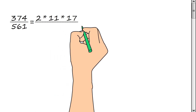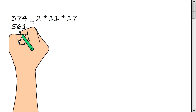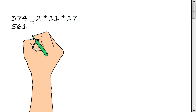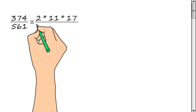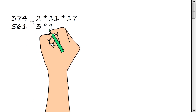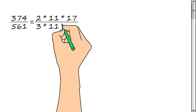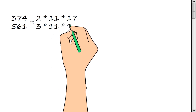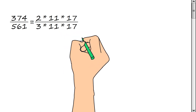Now we represent the denominator of the fraction as a product of prime factors: 3, multiply by 11, multiply by 17.